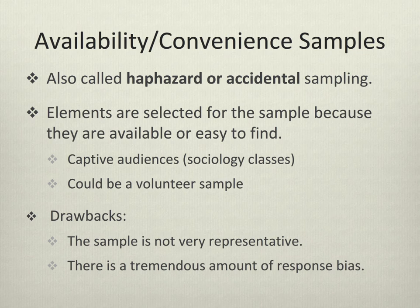One of the big drawbacks to availability sampling is that it's not very representative. There's a tremendous amount of response bias — our friends and family members who are willing to do our survey probably don't look a whole lot like the general population. Even if you do things to mitigate the fact that it's a convenience sample — for example, going to several locations on campus and counting every fifth student to come out the door at three or four different times of day to capture morning, afternoon, and evening students — it's still an availability or convenience sample and has some significant drawbacks.